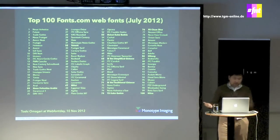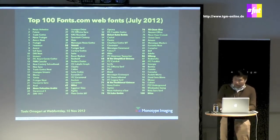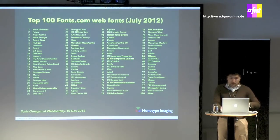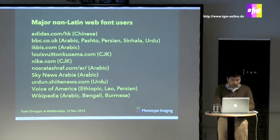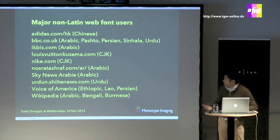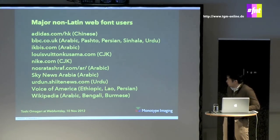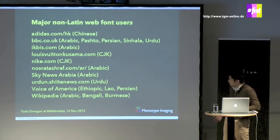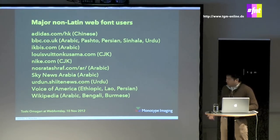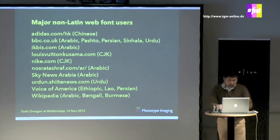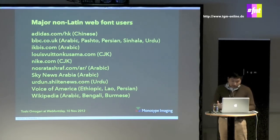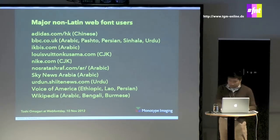Between five and ten non-Latin fonts are among the top 100 most popular web fonts on our library, and this number is increasing. Who is using non-Latin web fonts? For example, Adidas using our Chinese, Nike using our CJK, BBC Arabic using Arabic — I think from Fontech — and Wikipedia self-hosting Arabic, Bengali, and Burmese for compatibility reasons, not commercial ones.